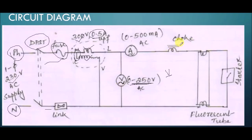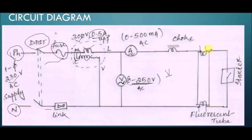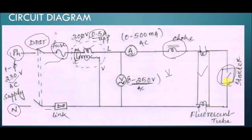Then we have the choke — an inductive coil with a core. Then we have the fluorescent tube, which has four terminals, two on each side. Inside the fluorescent tube there is fluorescent powder. We also have a starter, which is used to start the tube light. To install a fluorescent tube you basically need three things: one is the choke, second is the fluorescent tube, and third is the starter.